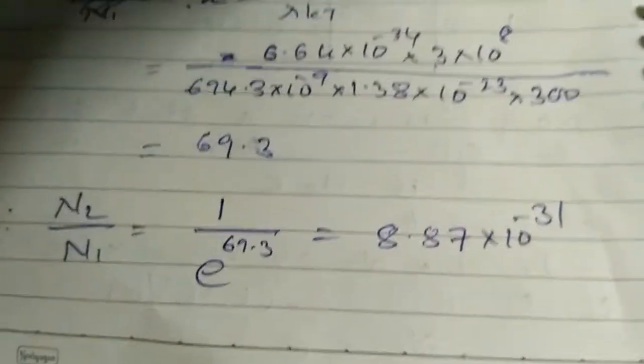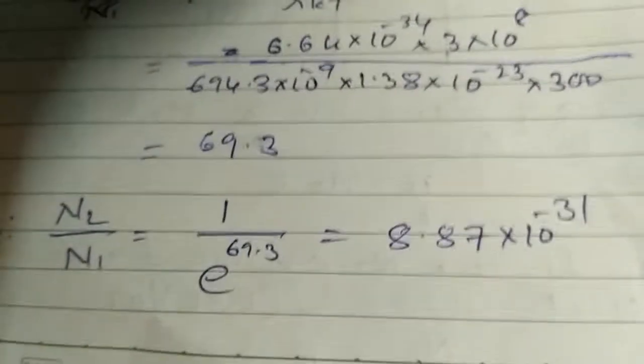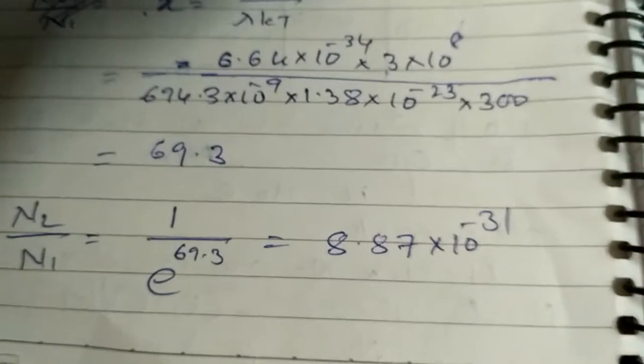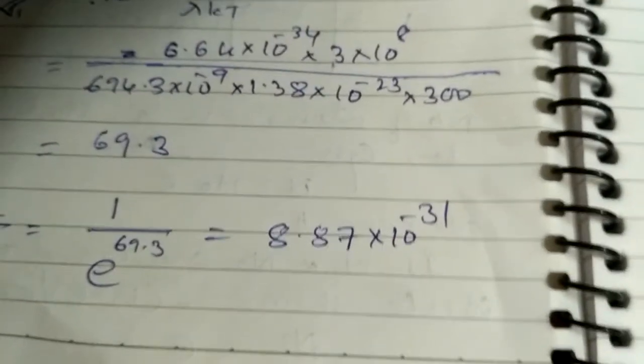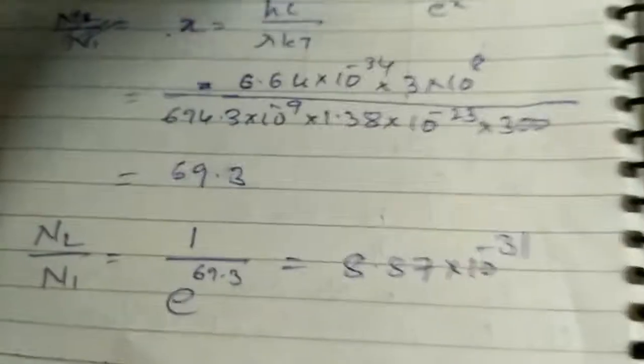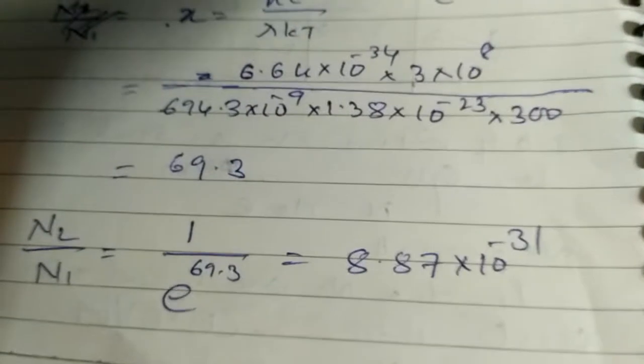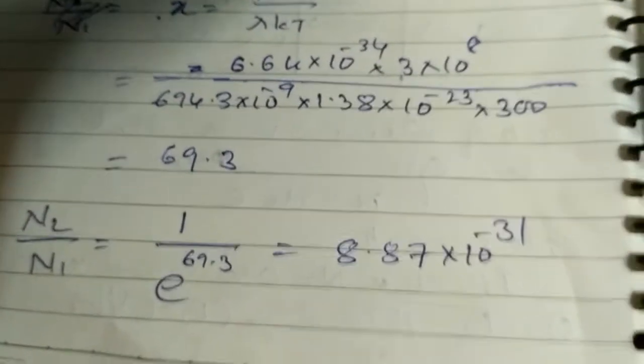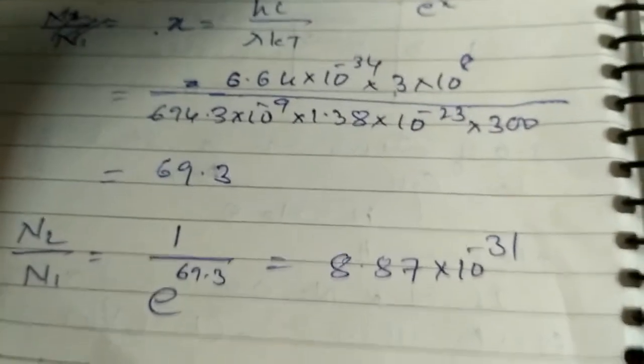Substituting X into the equation, N2/N1 = 1/e^69.3 = 8.87 × 10^-31. Therefore, the ratio of atoms in the excited state to the ground state is 8.87 × 10^-31.